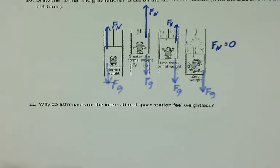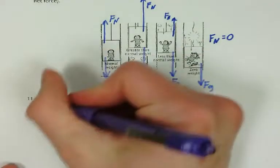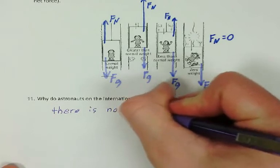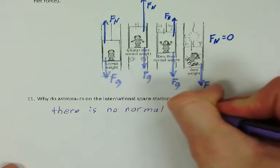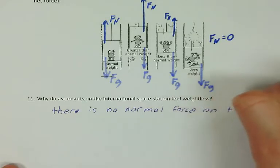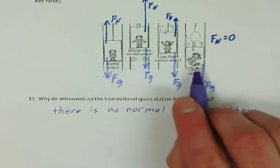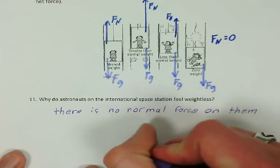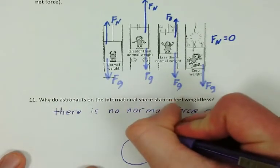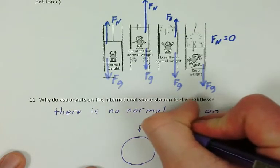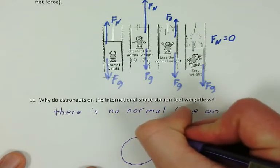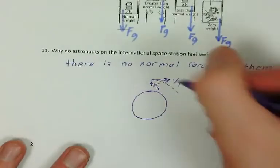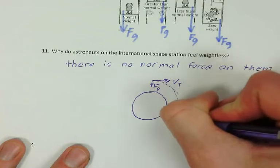So, why do astronauts in the International Space Station feel weightless? They feel weightless because there is no normal force on them. In fact, there's no normal force because like this girl in this picture who's in free fall, the astronauts are in free fall. They're in free fall around the earth. They're getting pulled down towards the earth by gravity, but they have a tangential velocity forward. That tangential velocity forward pulls them forward as they go around the earth. And so, as they fall towards the earth, they're falling around it.